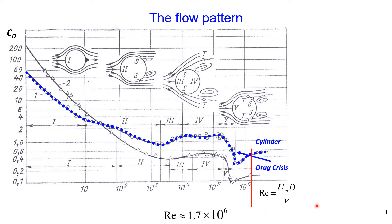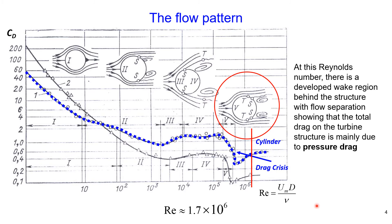For our problem the Reynolds number is around 1.7 × 10⁶ and our flow pattern is shown on the diagram. At this Reynolds number there is a well-developed wake region behind the structure with flow separation, showing that the total drag on the turbine structure is mainly due to pressure drag. We have two flow separation points and a flow separation region behind the structure. Flow separation is a flow pattern when flow remains no longer attached to the solid boundary.